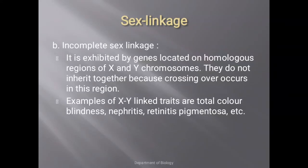In incomplete sex linkage, genes are located on the homologous region of X and Y chromosomes. They do not inherit together because crossing over does take place in the homologous region, so genes cross over and new combinations are formed. The pure set does not transfer from one generation to another. Examples include total color blindness, nephritis, and retinitis pigmentosa. That covers complete and incomplete sex linkage.